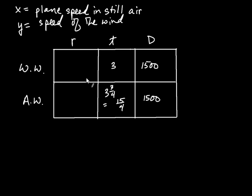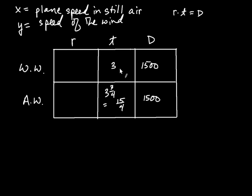At this stage, notice how for this row you have two out of the three squares filled in. One of the great things about these problems is that if you have two out of the three, you always get the third for free, because rate multiplied by time is always equal to distance. So on this first row, I know the time and the distance, so I can get the rate by dividing the distance by the time: 1,500 divided by 3 equals 500. So this rate with the wind is 500.